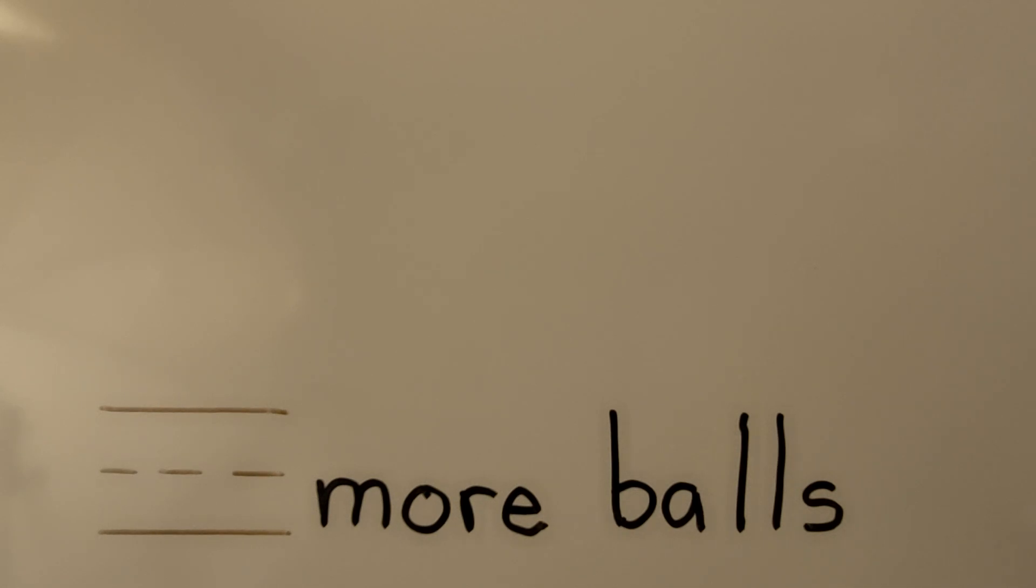Now, listen very carefully to this problem. There are 15 children. 10 children each have one ball. How many more balls are needed so each child has a ball? We ask ourselves, what do we need to find? We need to find how many more balls are needed so each child has one. And what information do we have? That there are 15 children and 10 of the children have a ball.